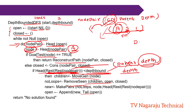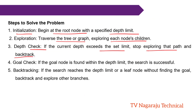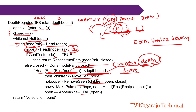This process is called Depth Limited Search. Briefly, the algorithm works as follows: initialization starts at the root node with the specified depth limit; traverse the tree by exploring each node's children; check the depth — if the current depth exceeds the limit, stop exploring and backtrack; if the goal node is found within the depth limit, return success; otherwise backtrack and explore other branches.